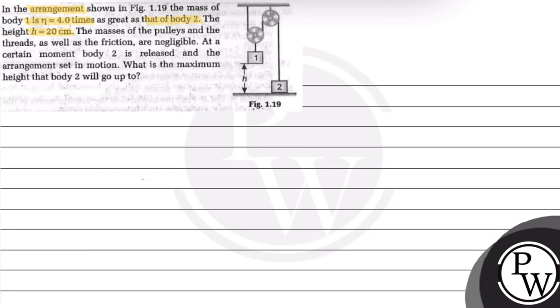The height h equals 30 centimeters. The masses of the pulley and the threads as well as the friction are negligible. At a certain moment, body 2 is released and the arrangement set in motion. What is the maximum height that body 2 will go up to?